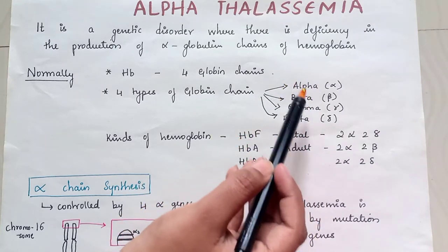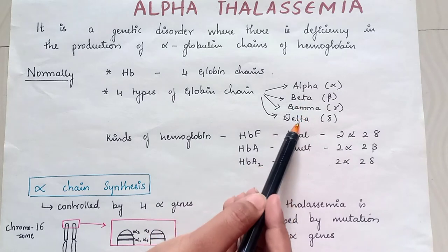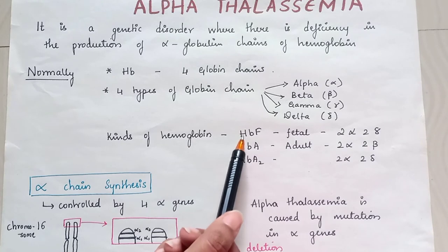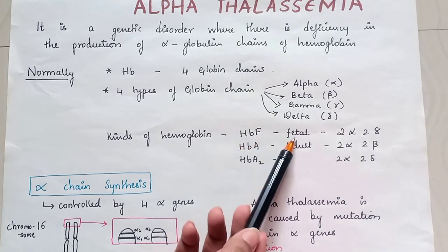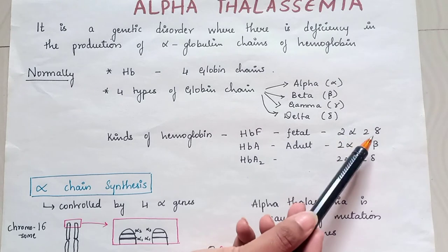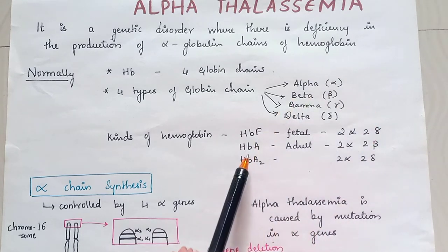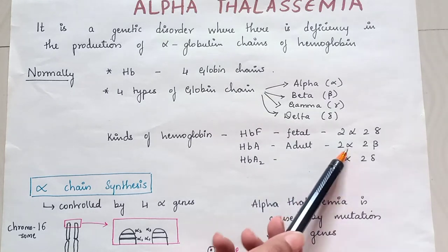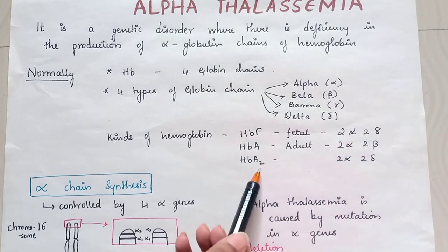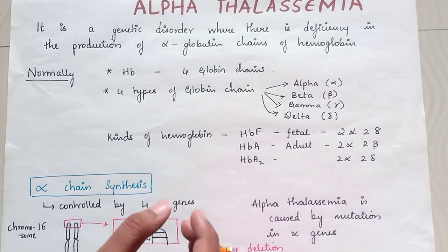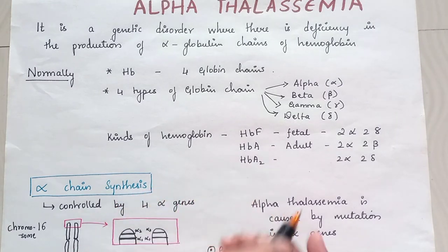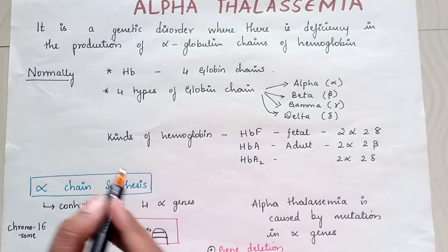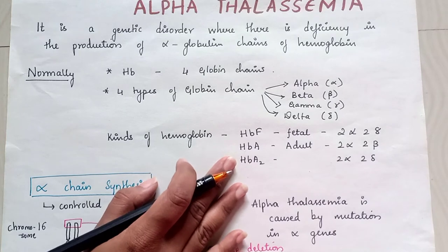The combination of these chains together forms the different kinds of hemoglobin. These include hemoglobin F, i.e. fetal hemoglobin, which has 2 alpha chains and 2 gamma chains; hemoglobin A, the adult form, which has 2 alpha chains and 2 beta chains; and hemoglobin A2, also an adult hemoglobin but in very few people, which has 2 alpha chains and 2 delta chains.